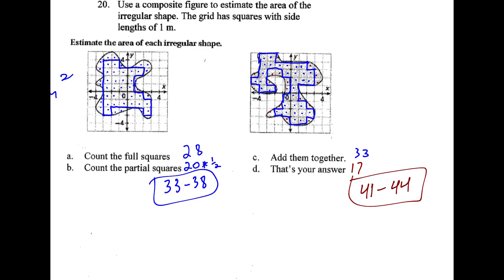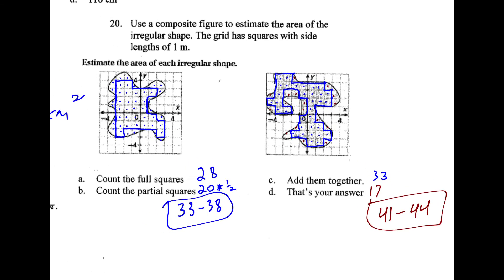For 20, these are a little bit tricky. The ones on the final are even easier than this. If you count up the full squares like I did here, maybe you'll get around 28 or 33. And then the partial squares, some of them are about half or different. They say add them all together. If it was me, my range would be somewhere between 33 and 38 or 41 and 44. If you got somewhere near there, you know what you're doing.